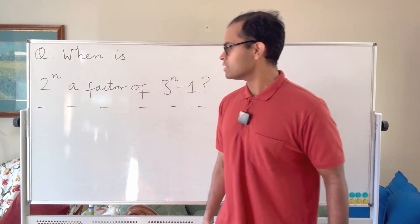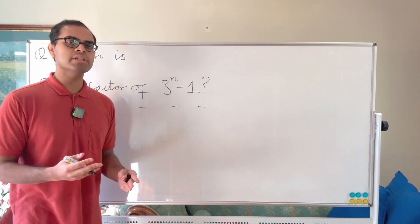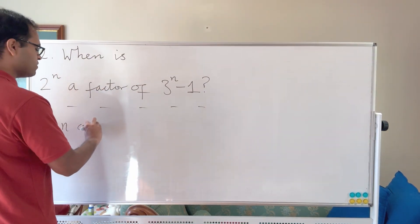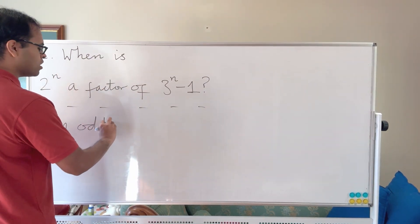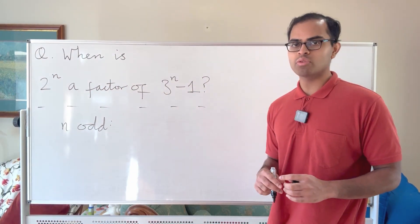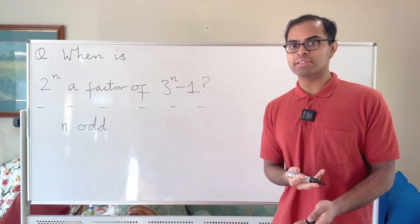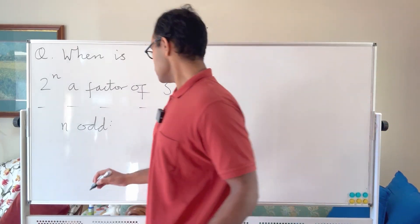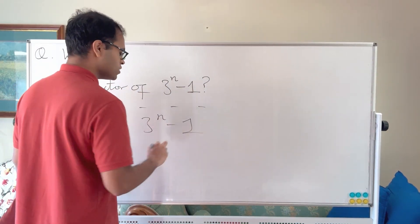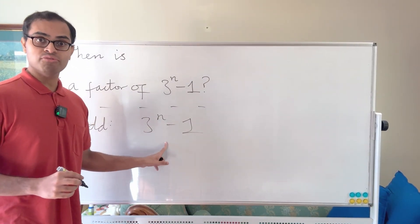Let's look at n odd and n even separately, since n equals 1 worked but higher odd values did not. For n odd, let's look at 3^n minus 1 and take remainders when dividing by 4 — that is, work modulo 4.